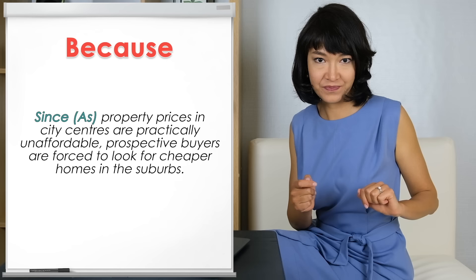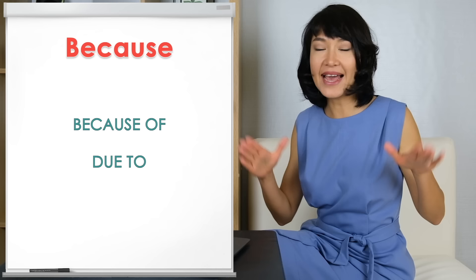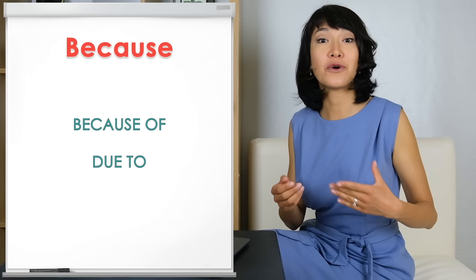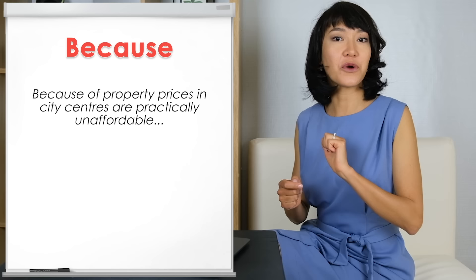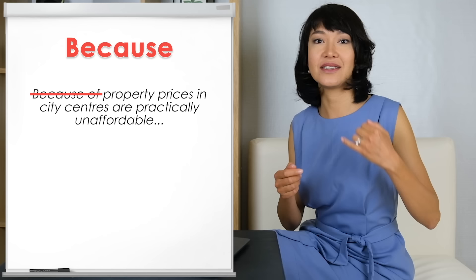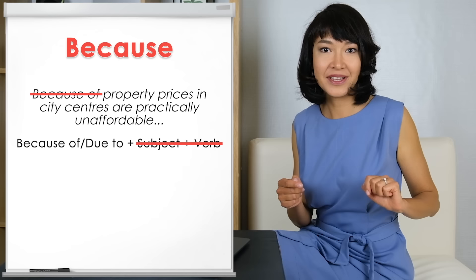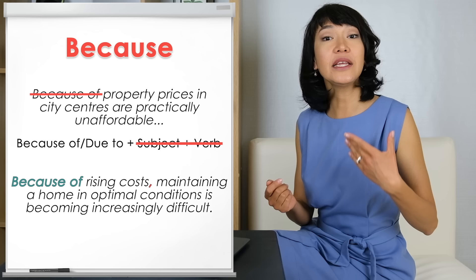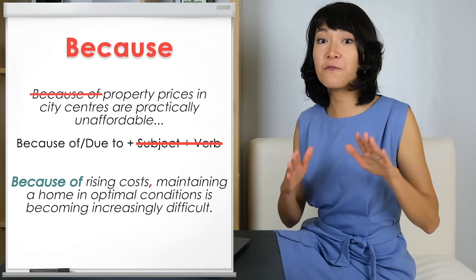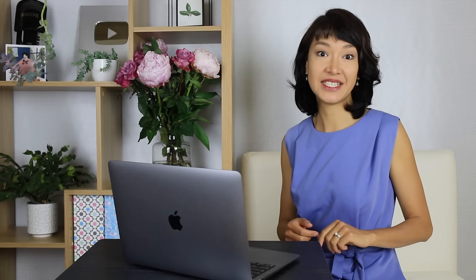One more point to pay very special attention to: a lot of people think they can use BECAUSE OF and DUE TO in exactly the same way as BECAUSE. You can't — it is wrong to write 'Because of property prices in city centers are practically unaffordable.' Why? Because these linking words are grammatically the same as DESPITE and IN SPITE OF — we do not follow them with a subject and a verb. Look at this correct example: 'Because of rising costs, maintaining a home in optimal conditions is becoming increasingly difficult.' Before the comma — no verb, just an adjective and a noun: 'rising costs.'